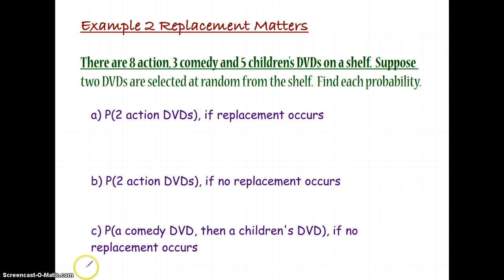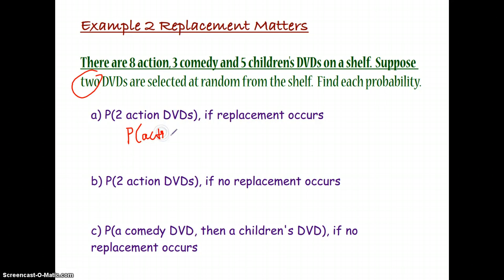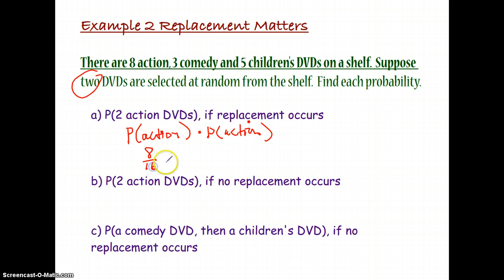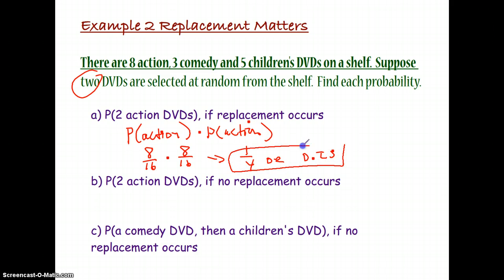There are 8 action videos, 3 comedy videos, and 5 children's DVDs — 16 total — all on a shelf. We're selecting 2 at random. For the probability of 2 action DVDs if replacement occurs, we select one and put it back. So the probability of action times the probability of another action: 8/16 times 8/16. This is the same as 1/2 times 1/2, which equals 1/4 or 0.25.